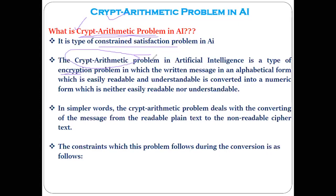What exactly is this cryptarithmetic problem in artificial intelligence? It is a type of encryption problem in which the written message in alphabetical form — which is easily readable and understandable — is converted into another form, which is the numeric form, which is neither easily readable nor easily understandable.